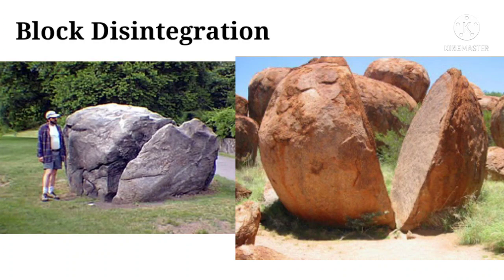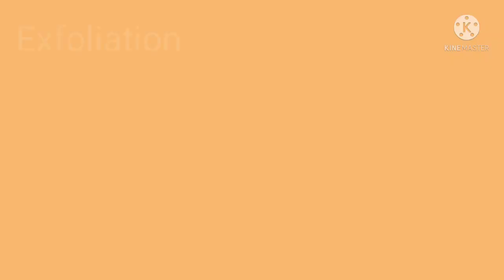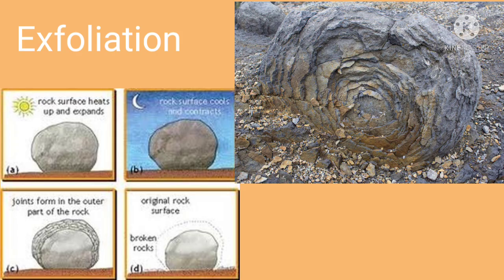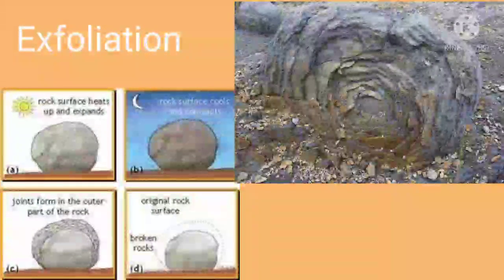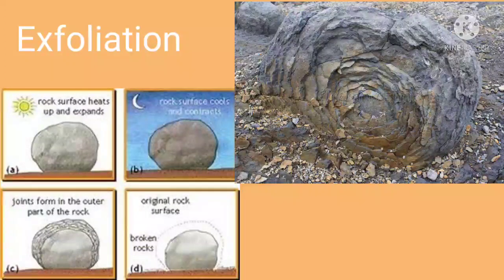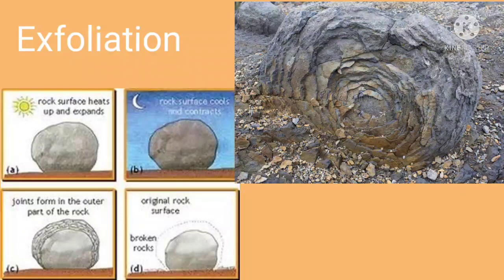Block disintegration is generally seen in arid or semi-arid areas where the amount of precipitation is very less. The next type of weathering is exfoliation. In this type, the outer surface of the rock is heated more and therefore the rock layer expands more than the inner part, which is not heated as much.